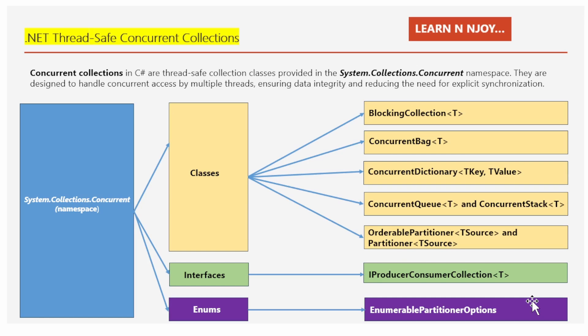Now, if I ask you why you would use these collections, you should be able to answer. Without these special collections, managing access to shared data in a multithreaded environment can be tricky and error prone. It's like having a free-for-all in the kitchen, which leads to mistakes, wasted time, and potentially even crashes in your application. The System.Collections.Concurrent namespace — its classes, interfaces, and enums — makes it much easier to write safe, efficient code that can handle multiple threads working together seamlessly.